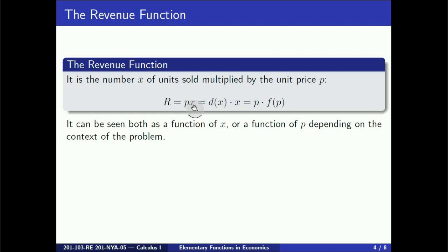If we express p as a function of x using the demand function, then R is a function of x and R(x) is d(x), the demand function, times x. If we express x as a function of p, then R is a function of p, and R(p) is p times f(p). The context of the problem will help us decide which variable to choose for the revenue function R.